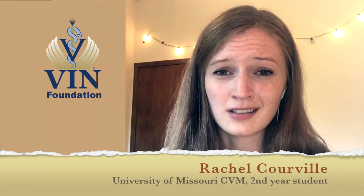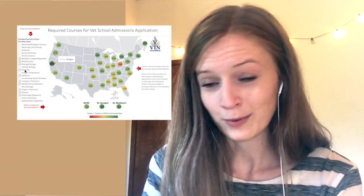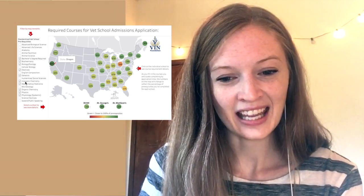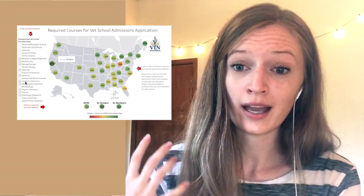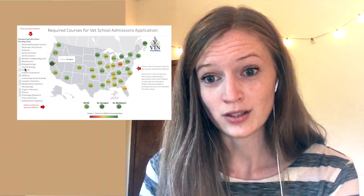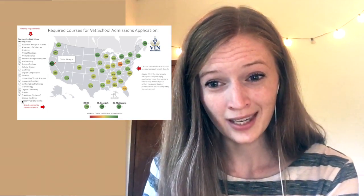There can be a lot of confusion as to which schools you want to apply to and which classes to take. The classes for those schools are all different and it can get really overwhelming. Not every school requires the same courses — that would be the dream, but that's just not how it happens. So you might be thinking: which schools can I apply to based on the courses I've already done, or which schools would be best for the courses I plan on taking?